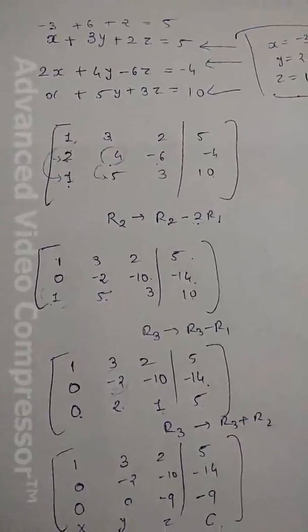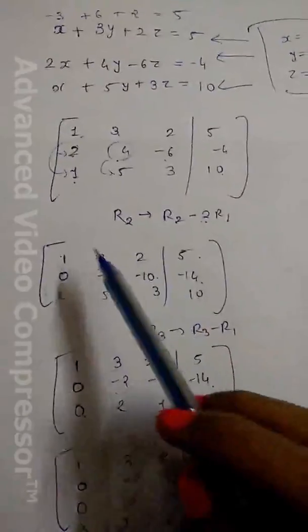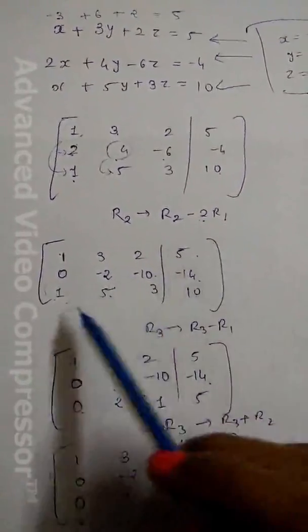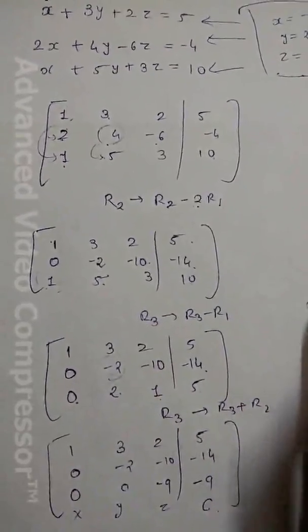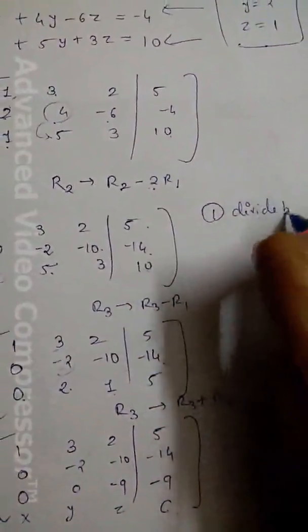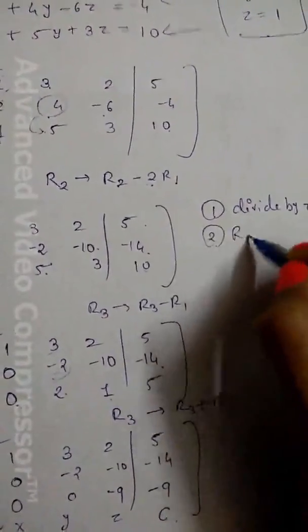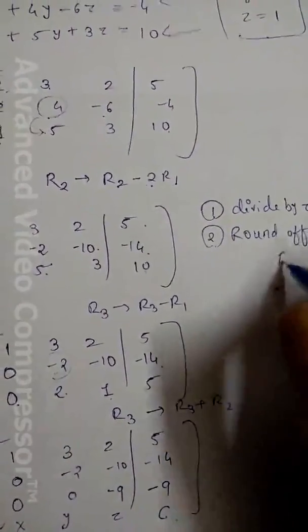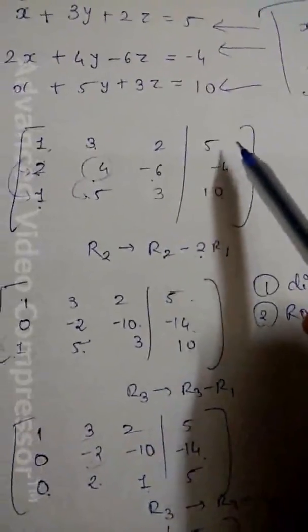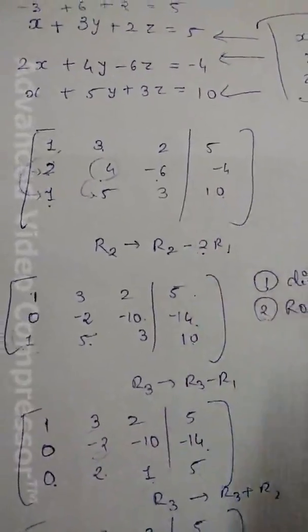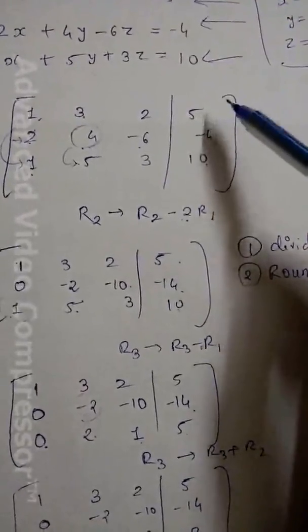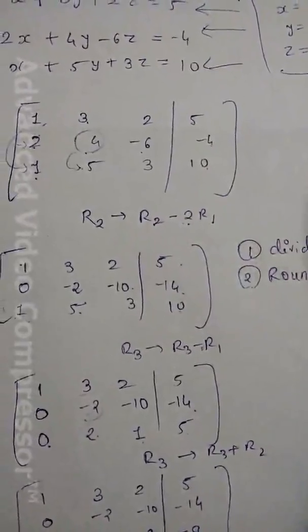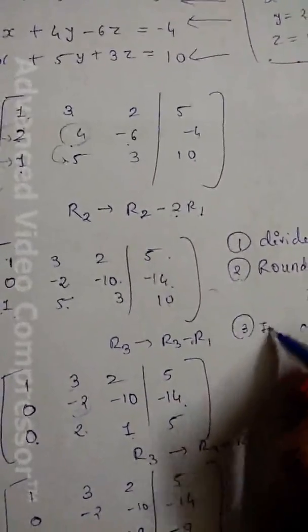Some pitfalls of Gauss elimination method: first, we calculate the augmented matrix and perform operations on it, but sometimes a division by zero error can occur — this is the divide-by-zero pitfall. Second is round-off error: if we divide 5 by 3 the result is a repeating decimal; we round it off and that error propagates through each step of the calculation.